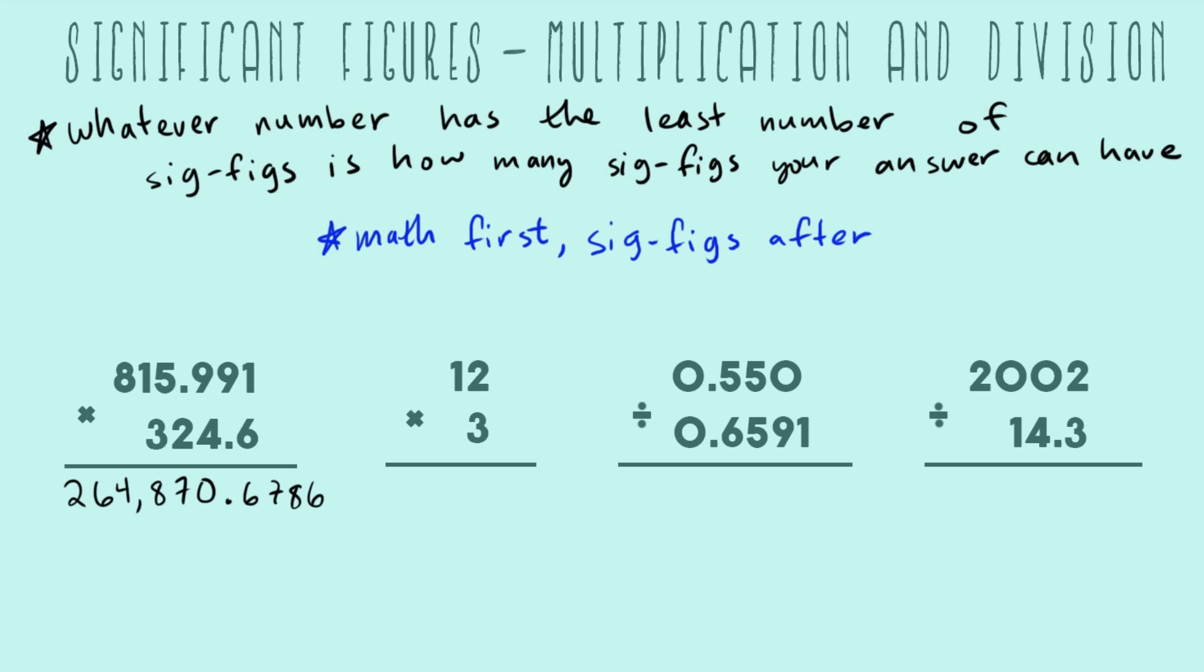Remember that as long as it's one through nine, it's not a zero, it's automatically a sig fig. So 815.991 has one, two, three, four, five, six sig figs. Our second number, 324.6, has four sig figs. Now we have our two numbers and how many sig figs we have: six and four. Our rule says whatever number has the least number of sig figs is how many sig figs our answer can have. Between four and six, four is smaller, so our answer has to have four sig figs.